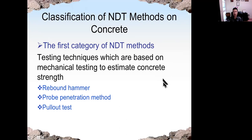Let's look at the classification of NDE methods on concrete materials. The first category of NDE methods is testing techniques based on mechanical testing to estimate the strength of concrete, such as rebound hammer, probe penetration measure, and pull-out test. These tests measure the surface hardness of the concrete, and can somehow give us an idea of the strength of the concrete.